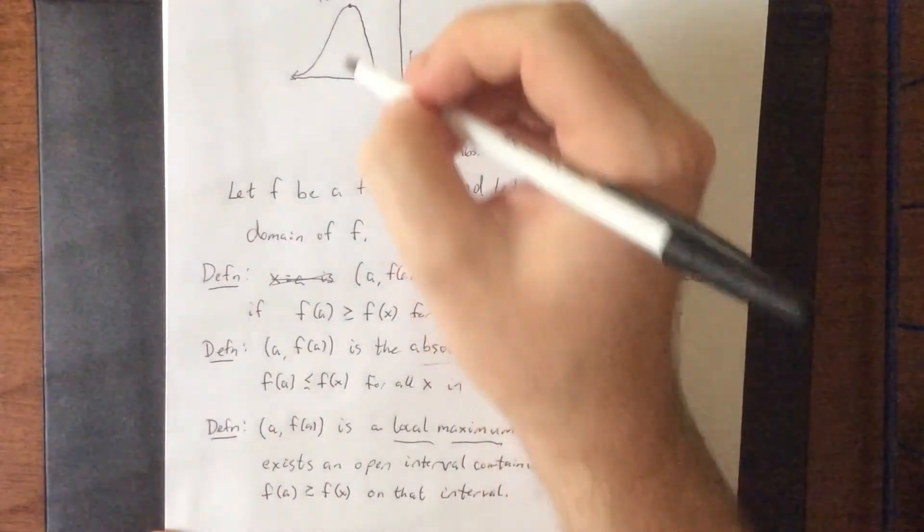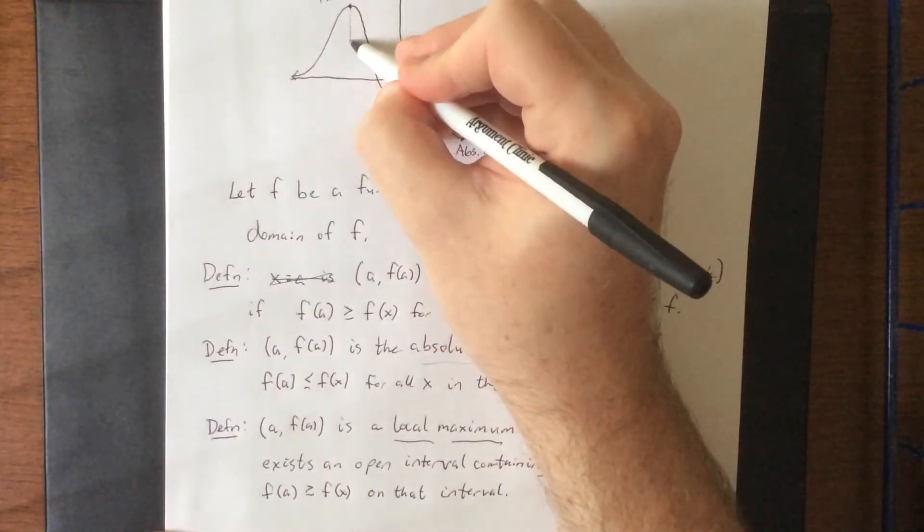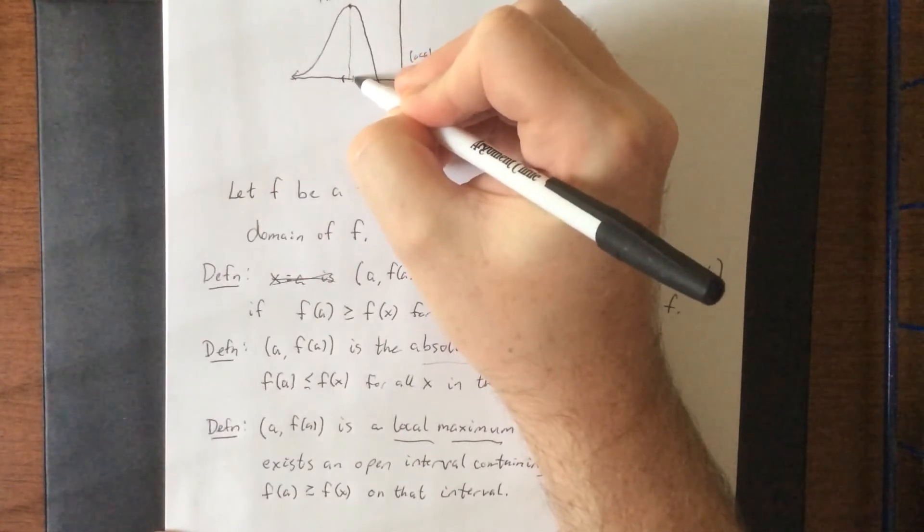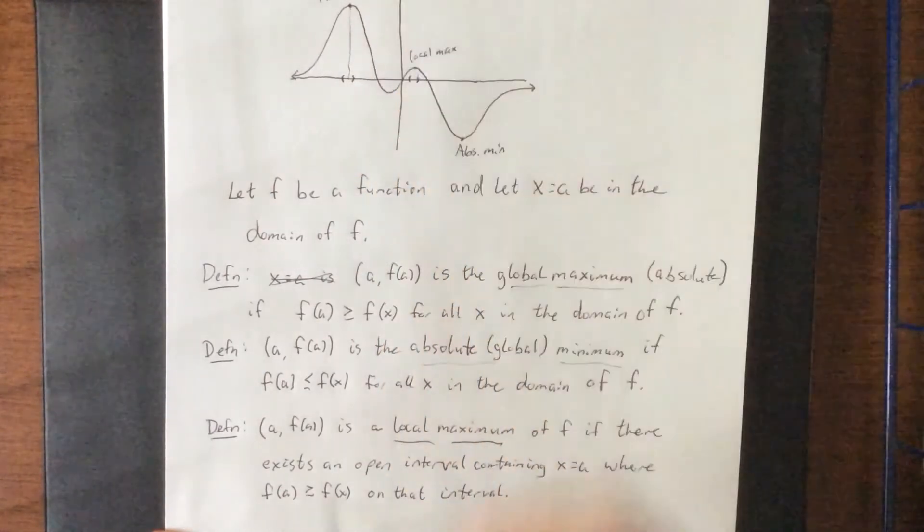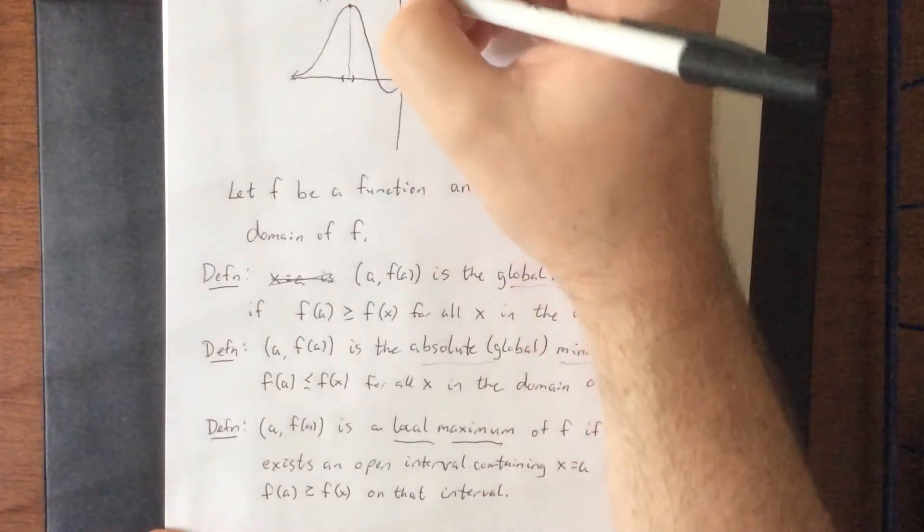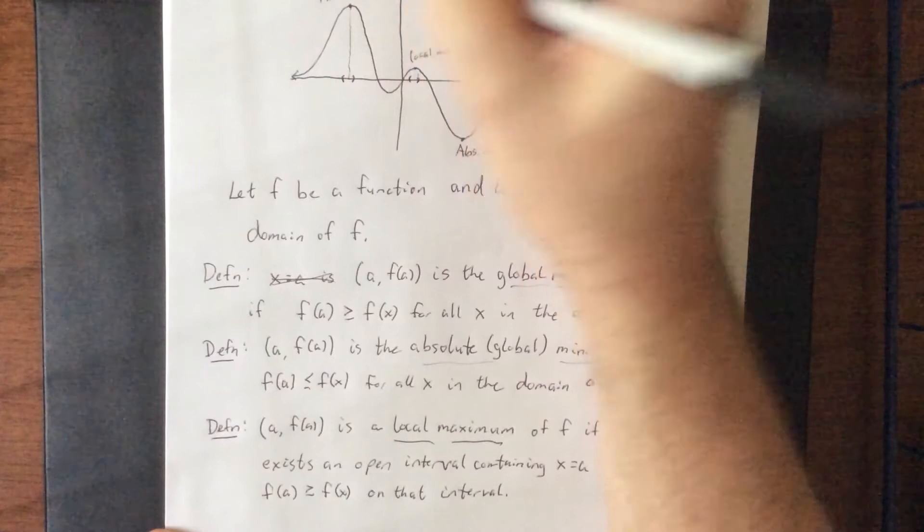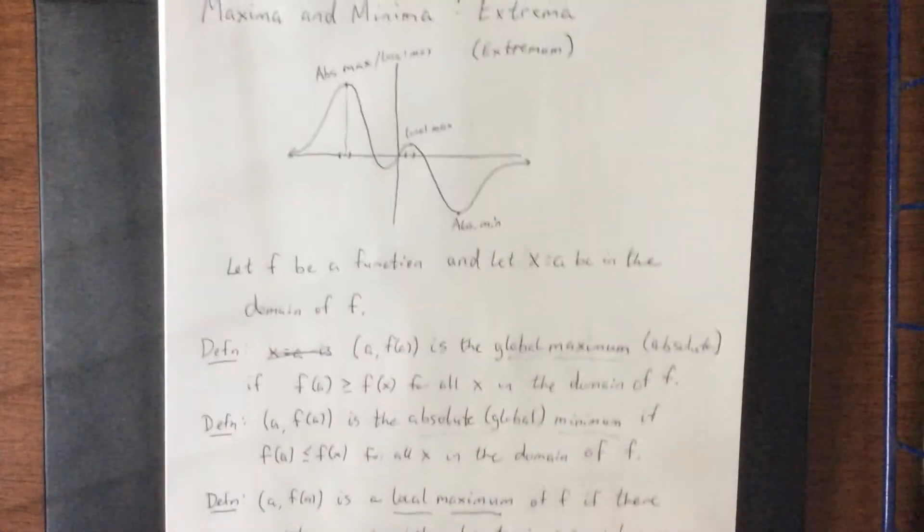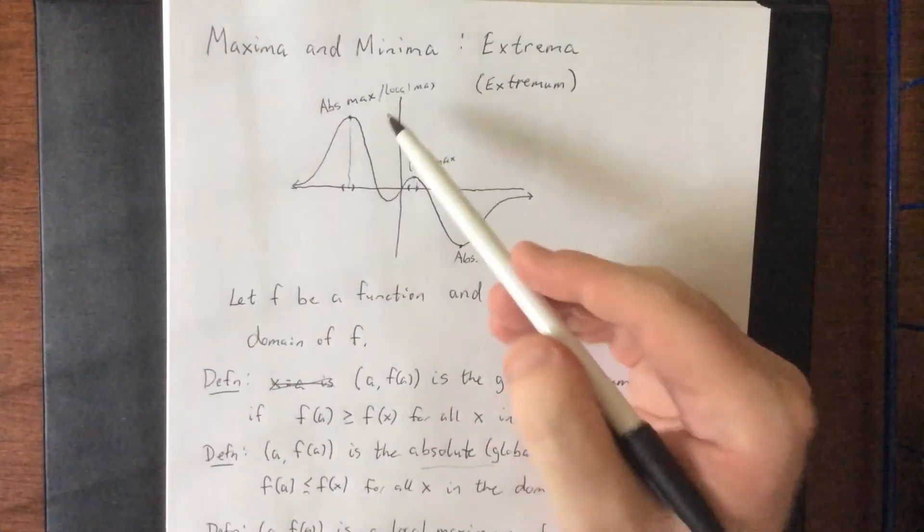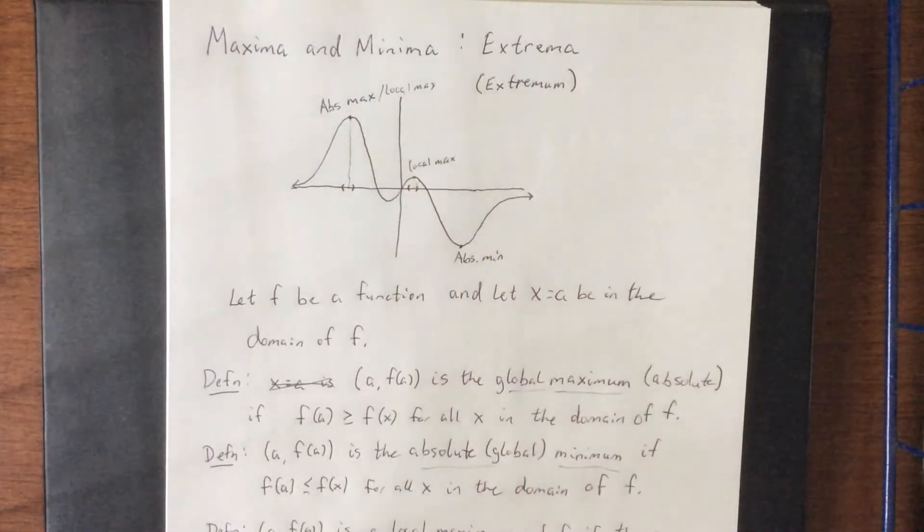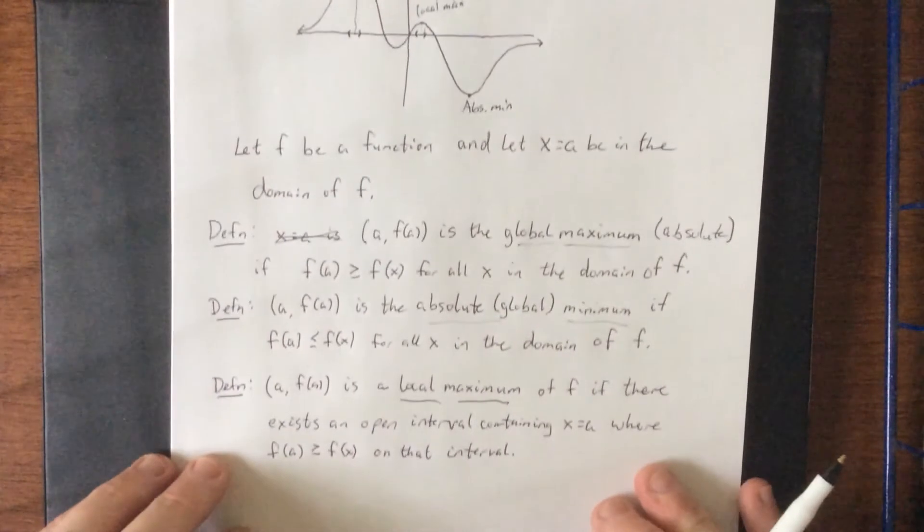Now when we take a look at our absolute maximum, we need to do the same thing and say, can I establish a little interval around that absolute maximum? And in this case, yes, I can. So this absolute maximum would also be a local maximum. Usually the only cases where an absolute maximum or absolute minimum is not also a local is when it happens to be the end point of an interval or the end point for the domain.